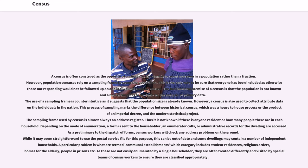Depending on the mode of enumeration, a form is sent to the householder, an enumerator calls, or administrative records for the dwelling are accessed. As a preliminary to the dispatch of forms, census workers will check any address problems on the ground. While it may seem straightforward to use the postal service file for this purpose, this can be out of date and some dwellings may contain a number of independent households.